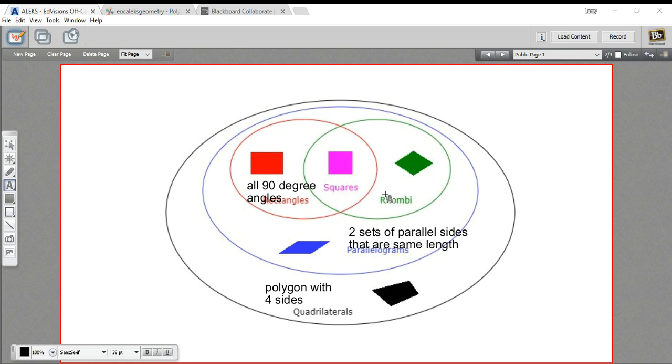What's different about a rhombus—it doesn't have anything to do with the angles. It's just that all four sides are the same length.